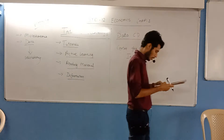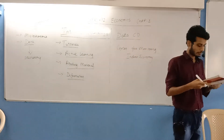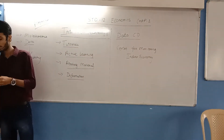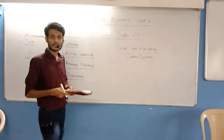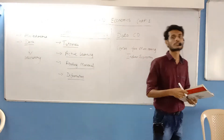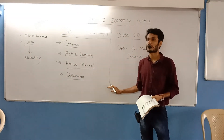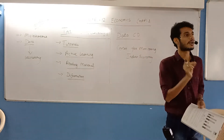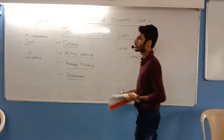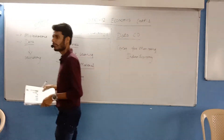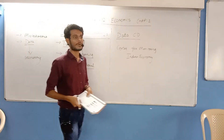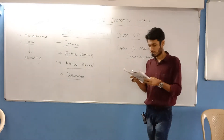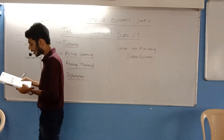One topic on page number seven is yet unexplained, which is the aspects to be considered while drawing a bar diagram. We have already discussed aspects to be considered while drawing a graph or diagram, but these aspects are particularly for a bar diagram. Quickly we will understand them — if you have a pen, you can underline certain words.